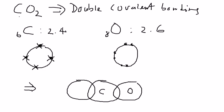Carbon has four electrons ready to share — two here, one here, and one here. For oxygen there are six electrons at the outermost layer: one, two, three, four, and then another two inside the overlapping area — one here and another one here.